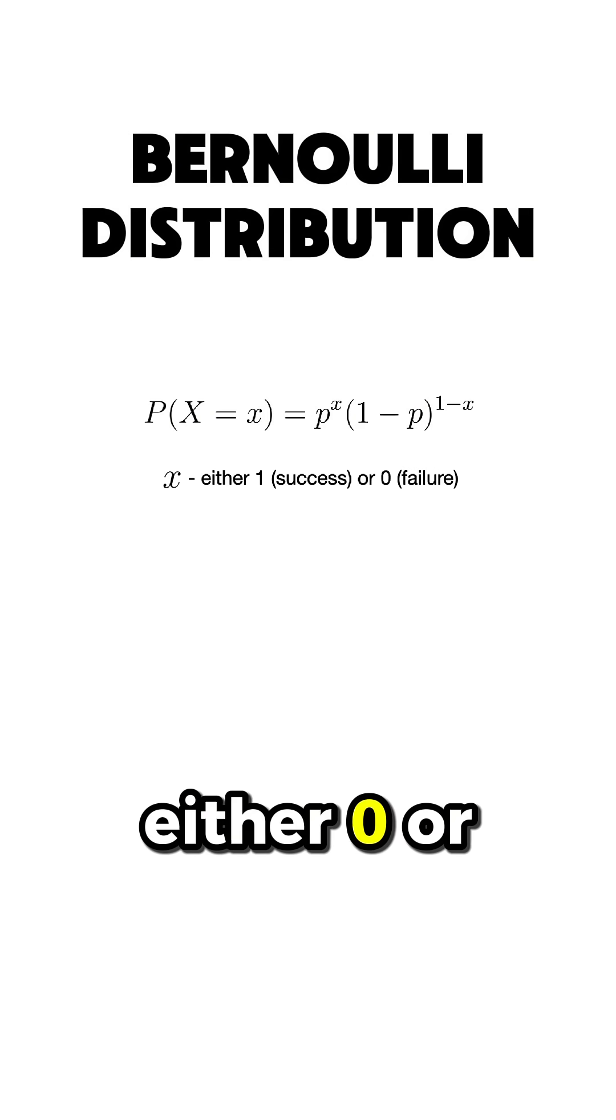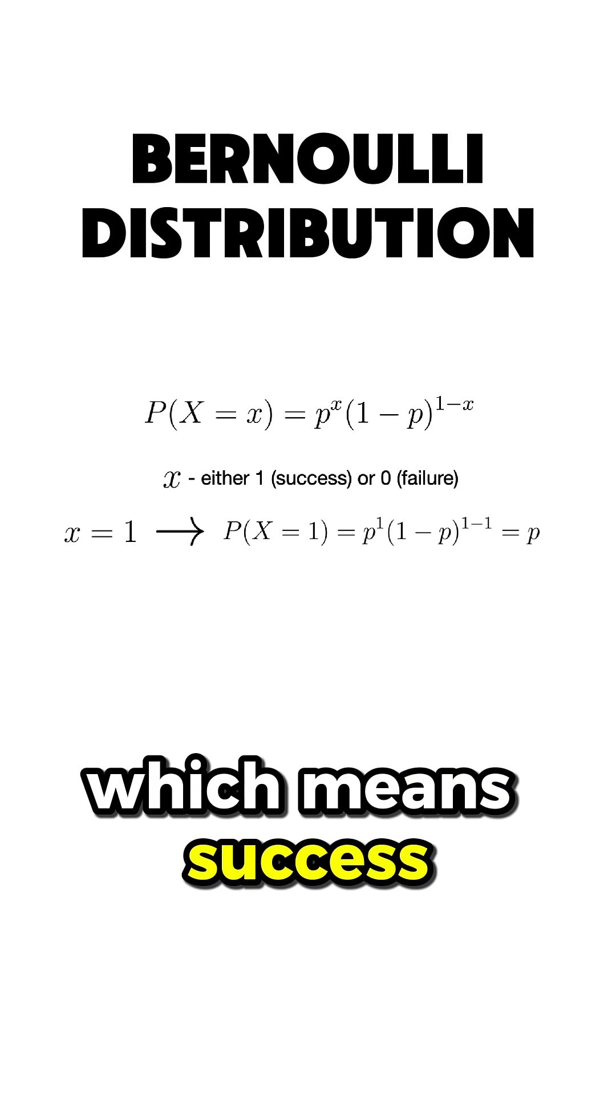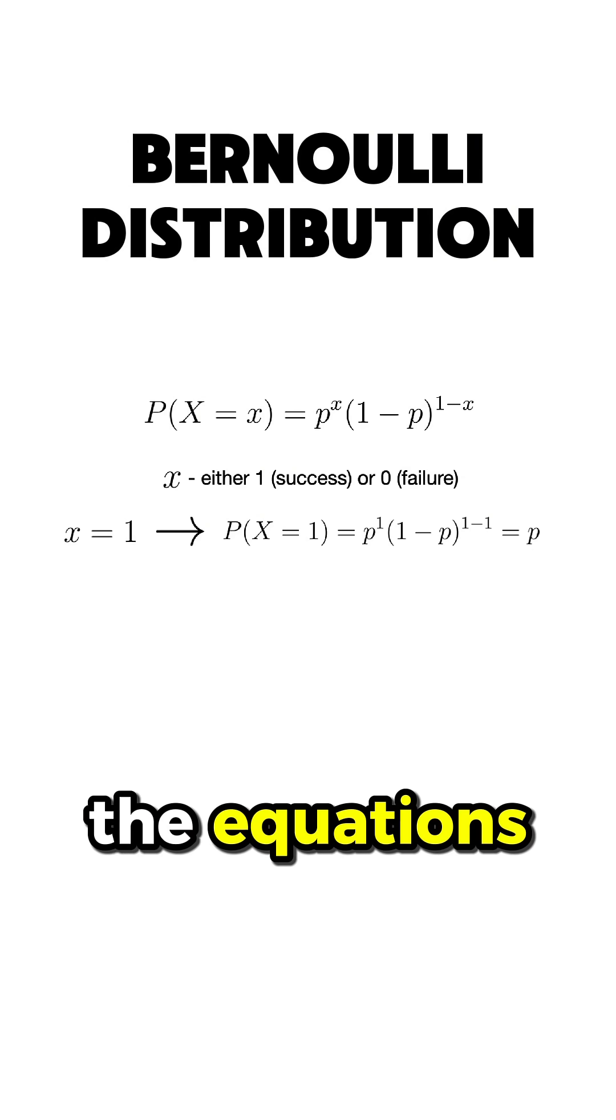And the probability distribution formula for a Bernoulli trial is the following, where x is either 0 or 1, and if x equals 1, which means success,